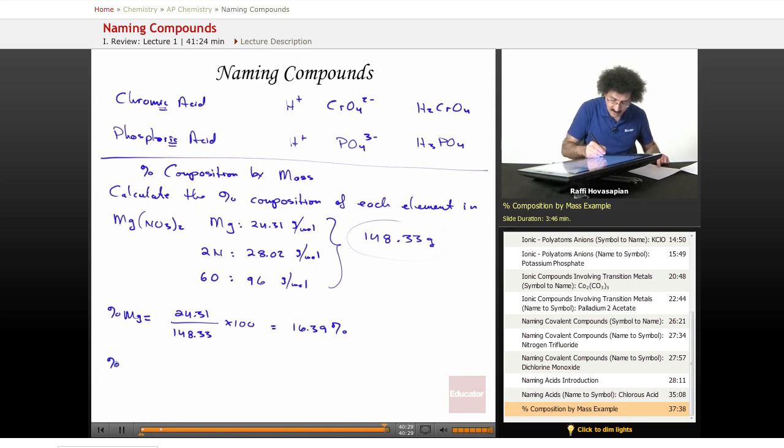Percent nitrogen. It equals 28.02 divided by 148.33 times 100. And you end up with 18.89%. That means of that mass, about 19% of it is nitrogen.